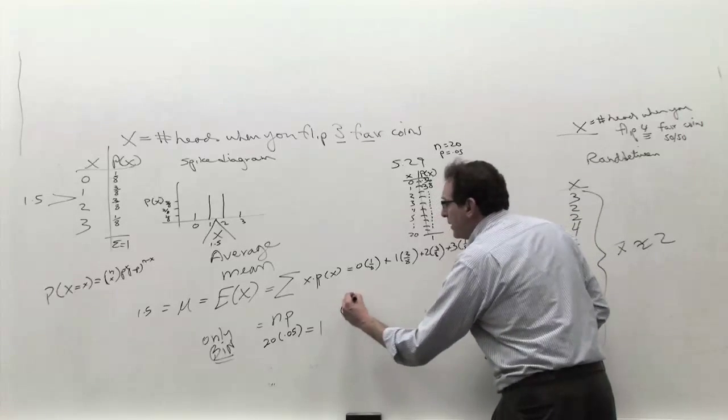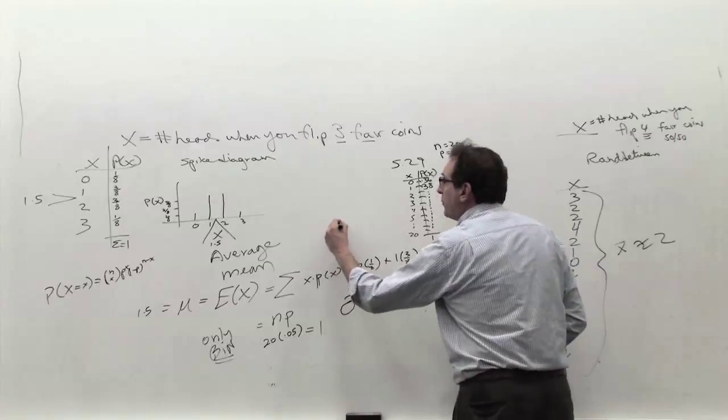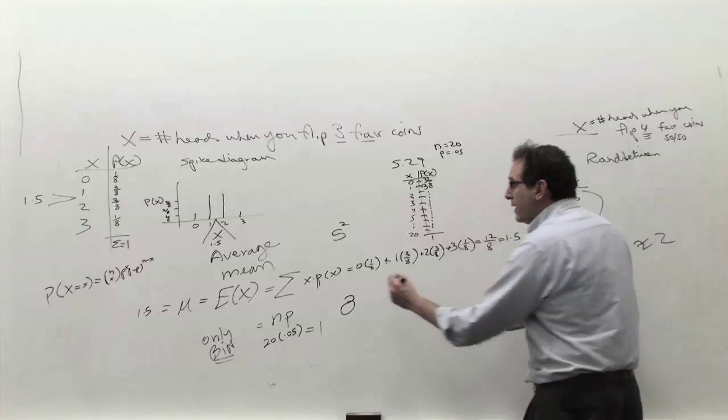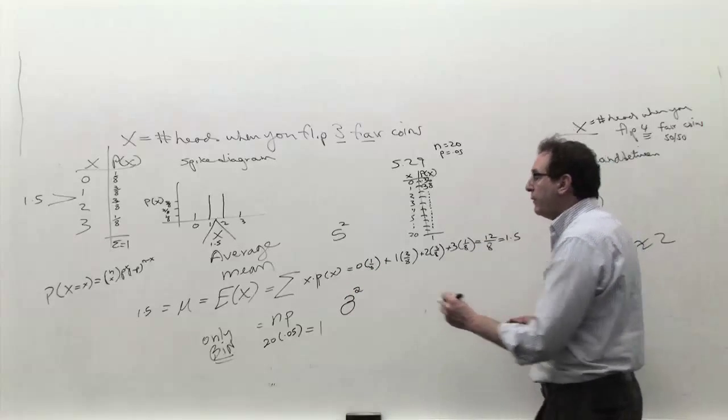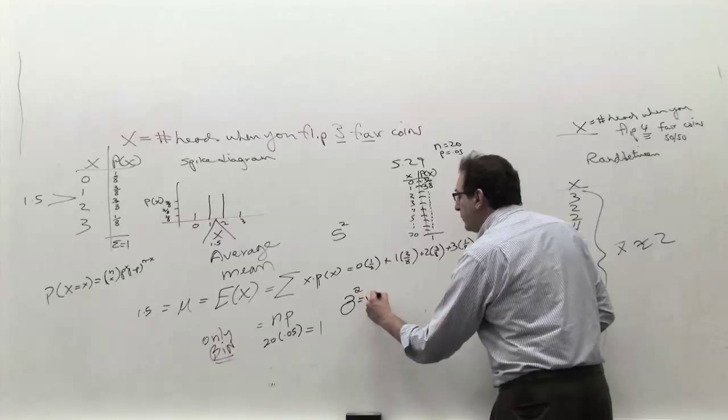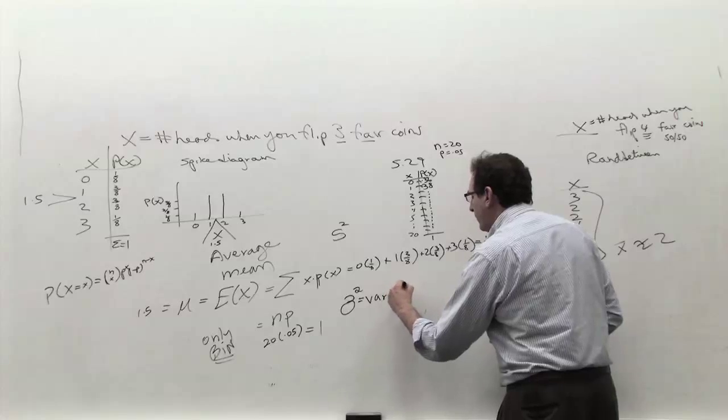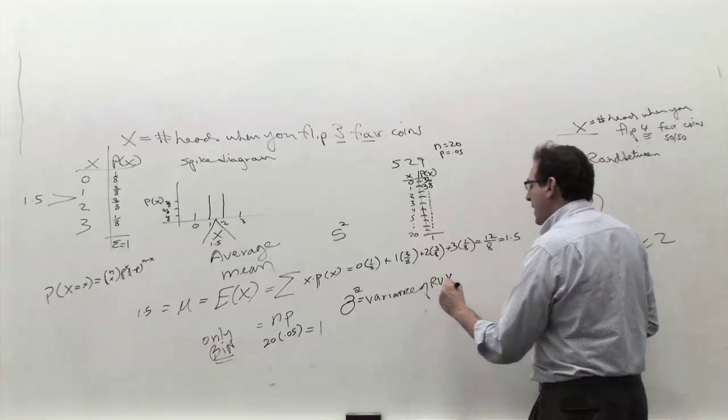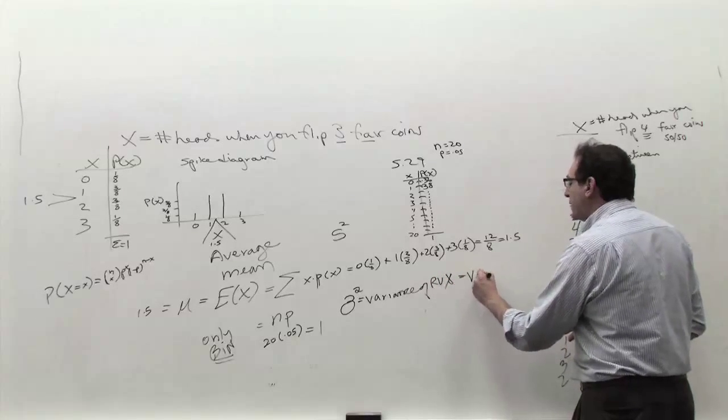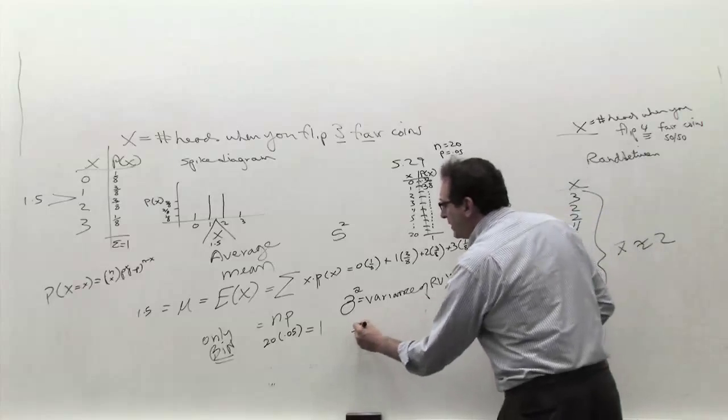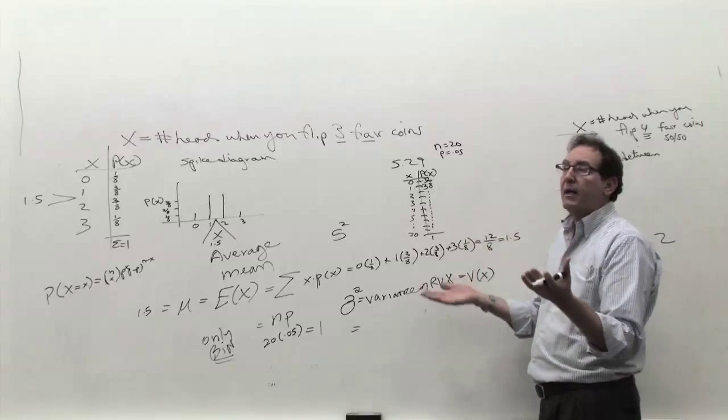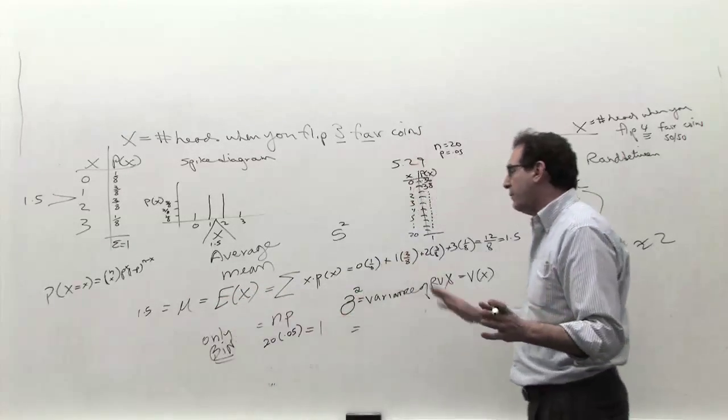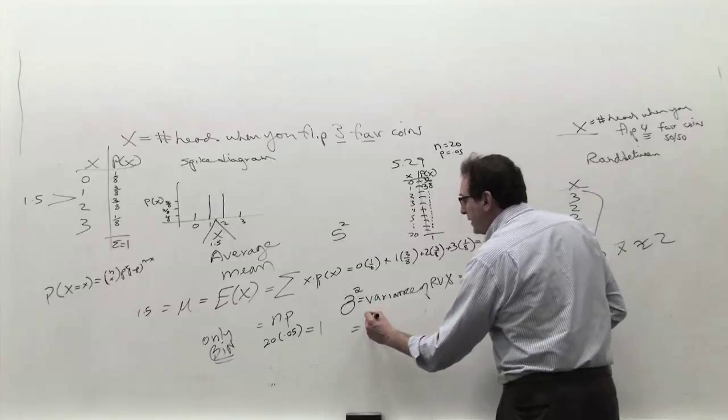Well, we call the sigma... We call the s squared in chapter three because we were talking about a sample, but now we're talking about the whole population, the whole set of random variables. We use the Greek letter lowercase sigma to represent the variance. This is the variance of the random variable. We call it V of X, but the formula, I wouldn't try to claim to be argued by common sense. Guessing the answer 1.5 is pretty much common sense. Guessing the answer here, I wouldn't say it's common sense.